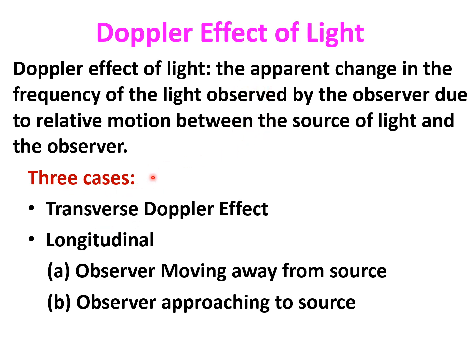The Doppler effect of light can be observed in three cases. The first is the transverse Doppler effect, when the observer is moving perpendicular to the source. The second and third are longitudinal Doppler effects, when the observer is moving towards or away from the source. We will discuss these three cases in detail.